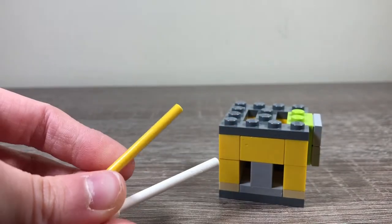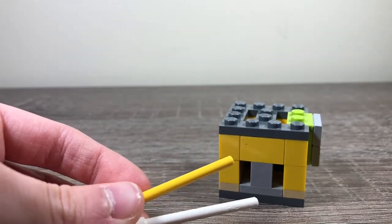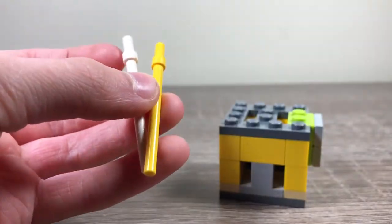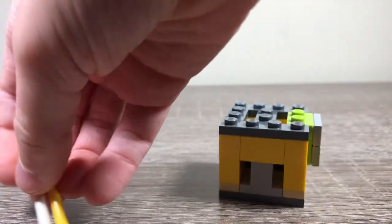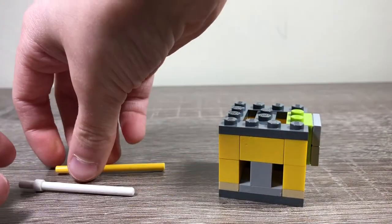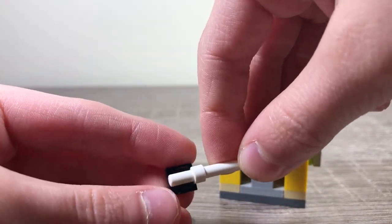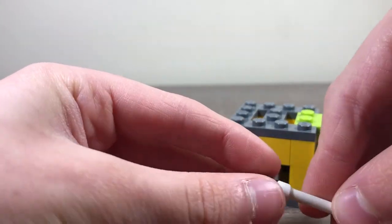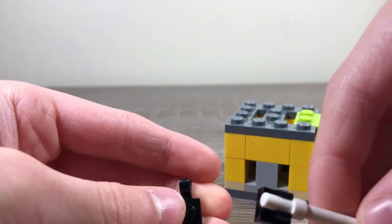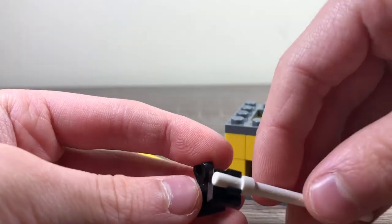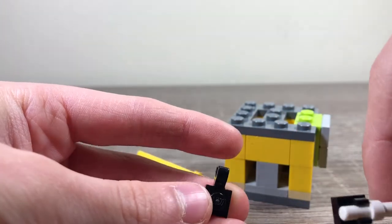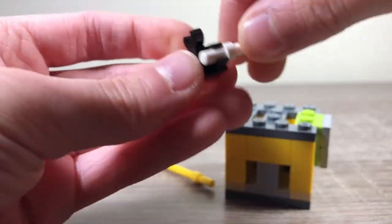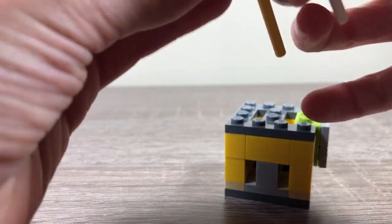So take two of these pieces. It can be in the same color or different colors like I have. Then attach one using this one by one plate with a hook on the top of it. Then take a one by one plate with the hook at the end of it facing this direction, and then connect it. Then attach the other one to that hook.